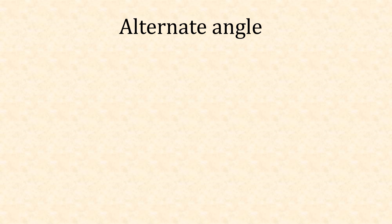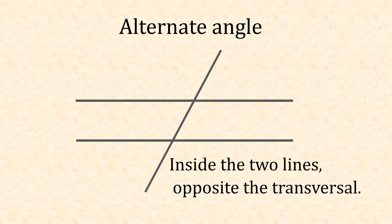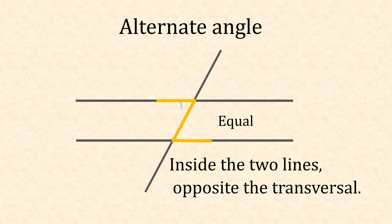For alternate angles, we know these are equal — inside and opposite the transversal. An easier way to remember this is to draw the letter Z, which shows where the angles are and proves they're equal. If we flip the Z or turn it upside down, we can still identify the two alternate angles.